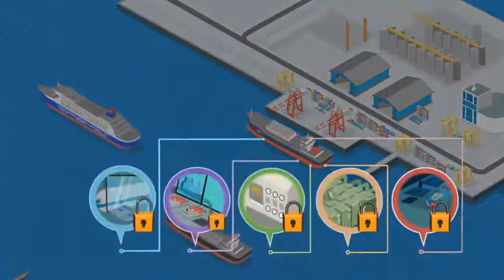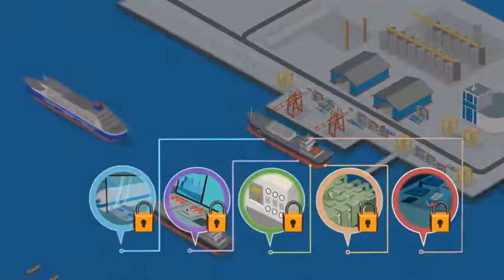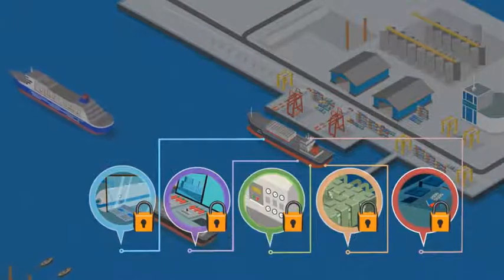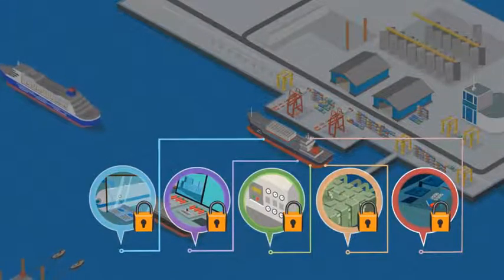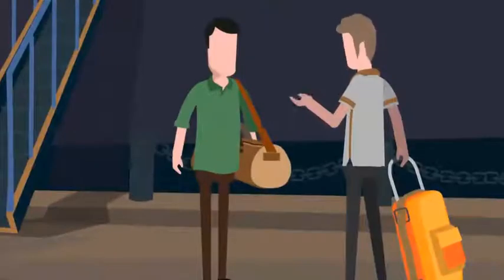We've looked at how security levels affect restricted areas and the declaration of security. Now we must consider embarking personnel, as this is the most common way for prohibited weapons to get onto a ship.